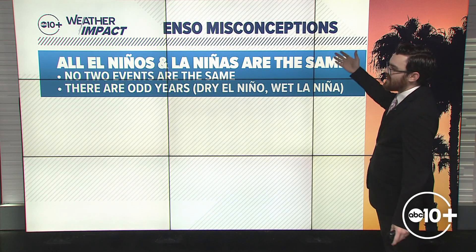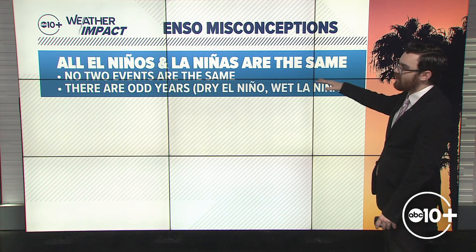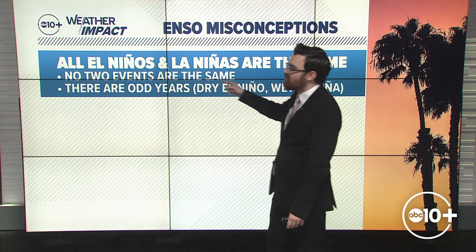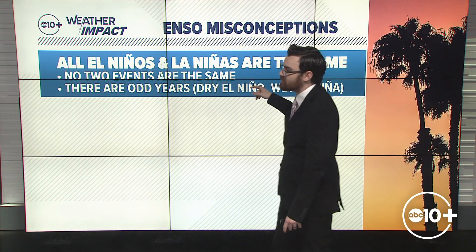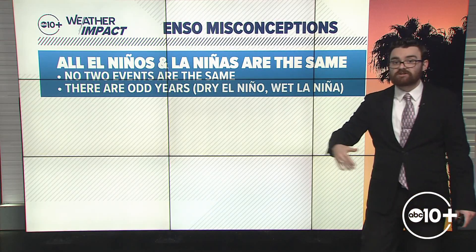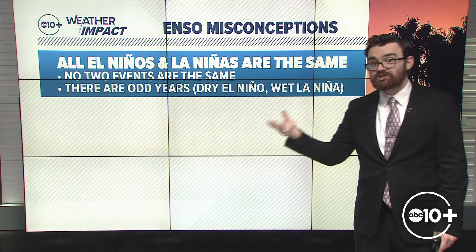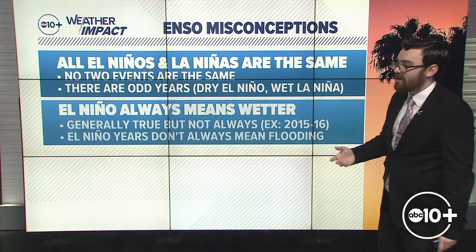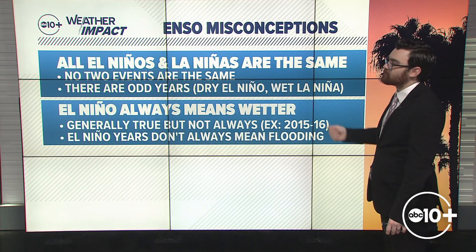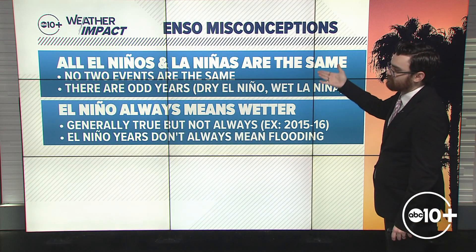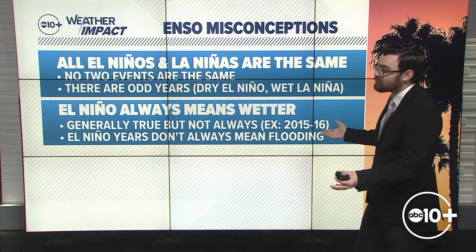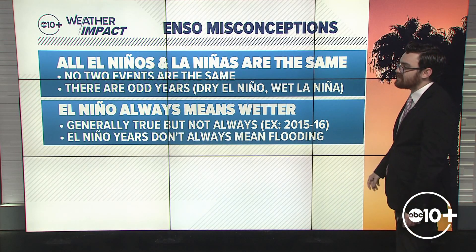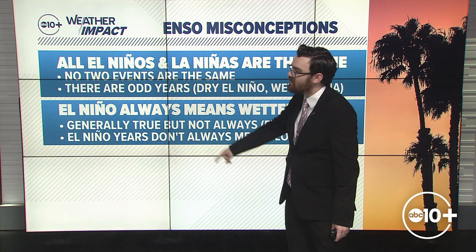So here are some common ENSO misconceptions. All El Niños and all La Niñas are the same — that's incorrect. No two events are the same; there are odd years where we have El Niño conditions but it's dry, or a La Niña setup but it's wetter than average. El Niño always means wetter — that's generally true but not always. For example, the very strong El Niño of 2015-16 was a below average year.